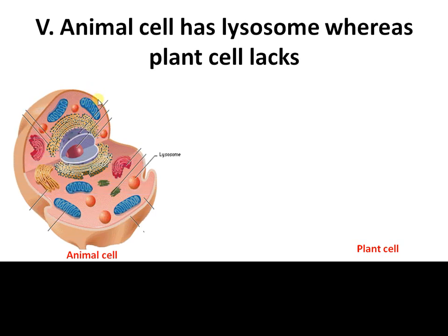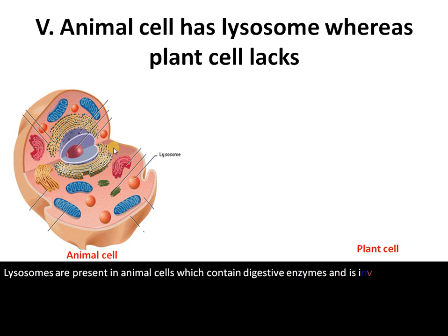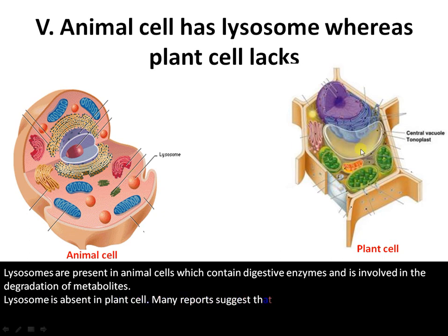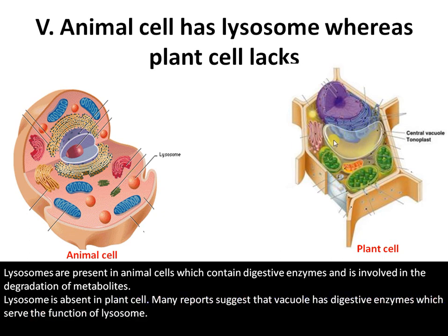Another difference is that in animal cells there is an organelle called a lysosome, which contains digestive enzymes involved in the degradation of metabolites and pathogens. But in plant cells, lysosomes are absent. However, many reports suggest that the vacuole has a pH of five and conditions similar to that of a lysosome, with many digestive enzymes present. So many consider the vacuole to perform the function of a lysosome in plant cells.